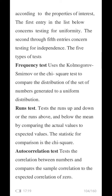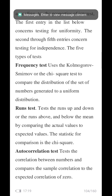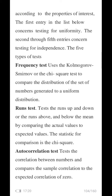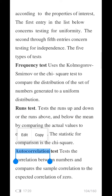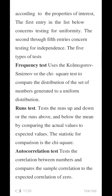The second type is the runs test. This tests the runs up and down, or the runs above and below the mean, by comparing the actual values to the expected values. This once again belongs to the first category — the uniformity test. The third one is the autocorrelation test.